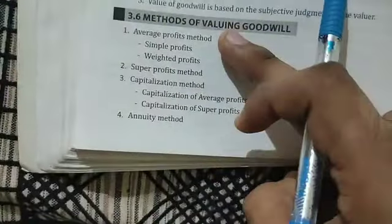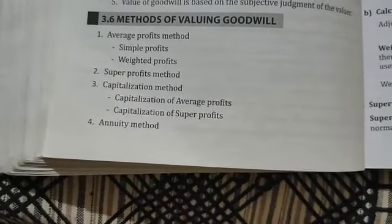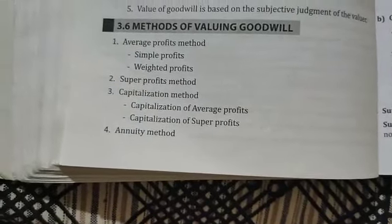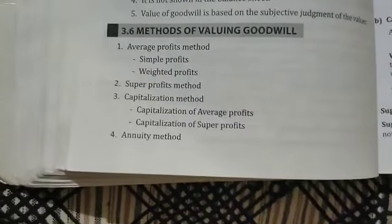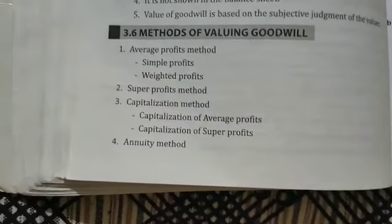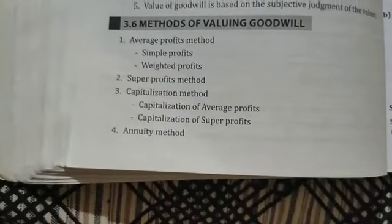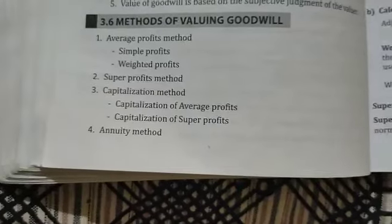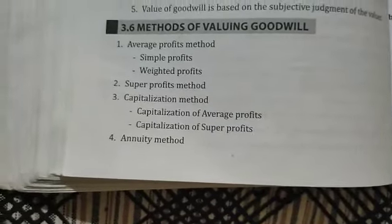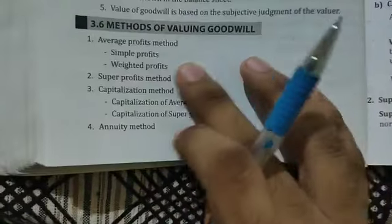In the average profit method, you first add all the profits, then minus the remuneration. The resulting profits are divided by the number of years to get the average profit.